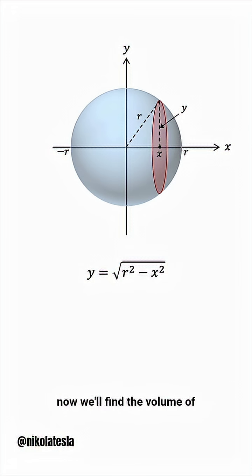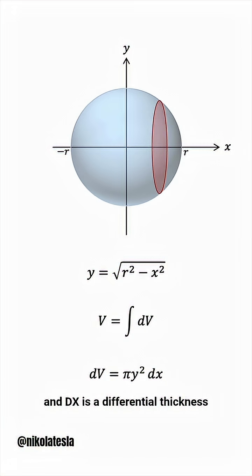And now we'll find the volume of the sphere by adding up all of the differential volumes of the slices. Think of dv as a of x dx, where a of x is the cross-sectional area of this slice, which is pi y squared, and dx is a differential thickness along the x-axis.